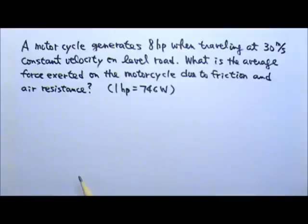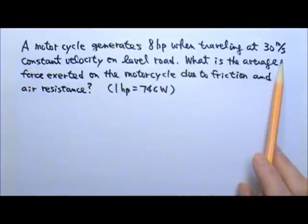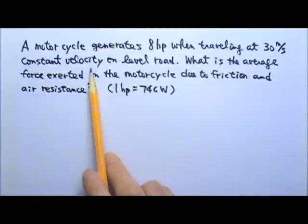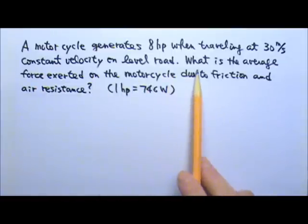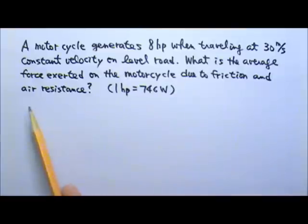Now let's try a problem. A motorcycle generates 8 horsepower when traveling at 30 meters per second constant velocity on level road. What is the average force exerted on the motorcycle due to friction and air resistance?